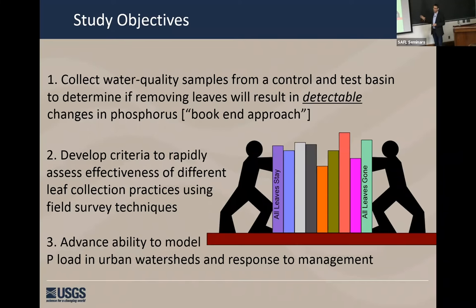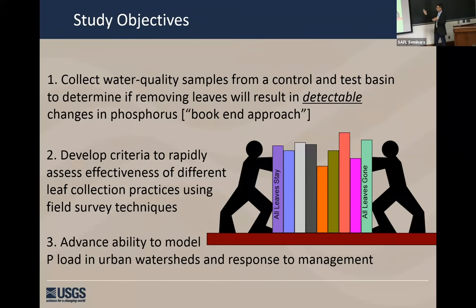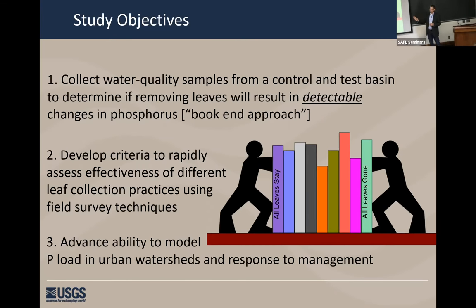The way we approach this from a research perspective is really threefold. First and foremost, we want to do water quality sampling — detect and quantify measurable significant changes in phosphorus concentrations and loads as a result of leaf collection practices. We're doing this through a bookend approach: one side of the spectrum you do nothing and all leaves stay, and the opposite spectrum is you do everything and remove all the leaves. Then we can progress beyond that to start filling in between. Ultimately what we want to do is boil it down into something usable for practitioners, usually in the form of a model, so we can predict end-of-pipe phosphorus concentrations and loads as a result of leaf collection management in the watershed.